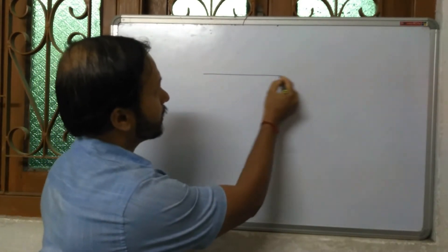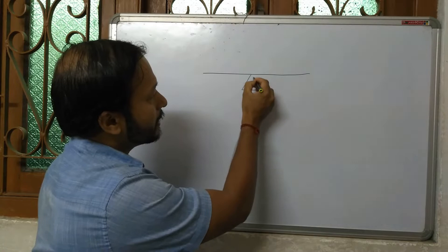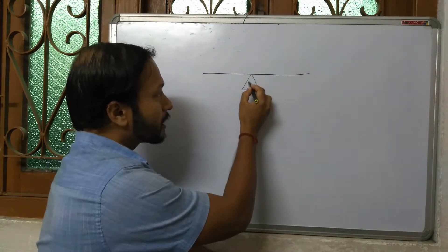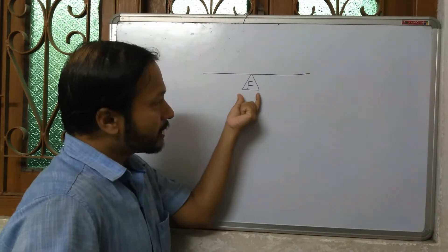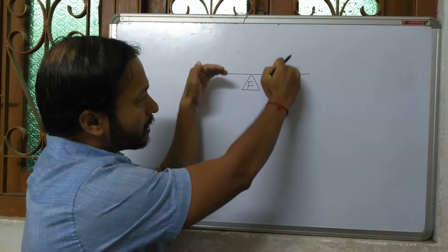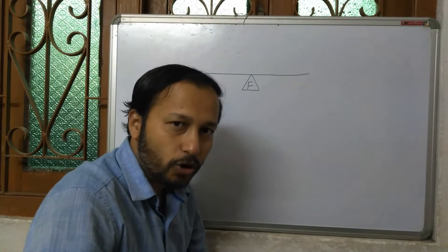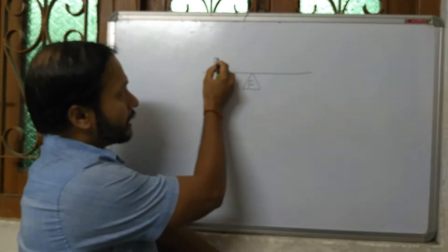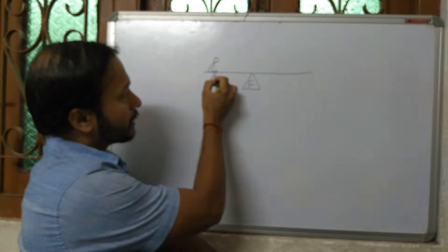Hi students, today we are going to see what is called clockwise torque and what is called anticlockwise torque. The idea is very easy. We'll take a very common example — a seesaw. This is the seesaw, and it is balanced from a point called the fulcrum. Since the seesaw is completely balanced, it is not experiencing any torque.